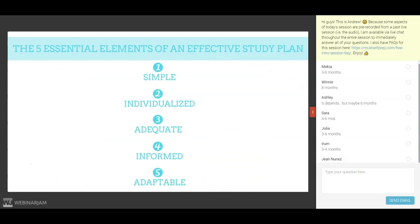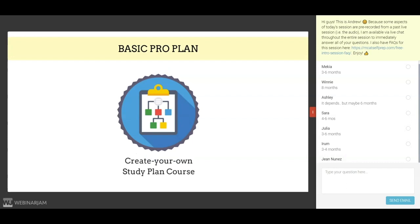In summary, to succeed on the MCAT, you need a study plan that is simple and focused on the most important resources, those produced by the AAMC. Your plan should be individualized, taking into account the various factors that describe your unique situation. It should be adequate, including enough study hours to result in your success. Also, it needs to be informed, carefully tracking your progress to ensure your plan is working. And finally, your study plan should be adaptable, changing based on real-time results. As you can tell, my Create Your Own Study Plan course will help you make a study plan that has all five of these essential elements. It walks you through the exact same steps that I use to help my private tutoring students create the study plans that have led many of them to achieve scores in the 100th percentile. Because it comes with the basic pro plan for just $9, almost every student studying on MCATselfprep.com will take advantage of it.